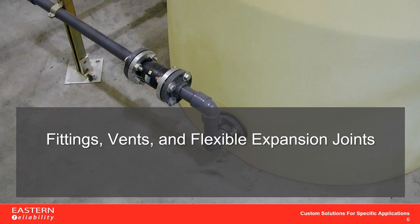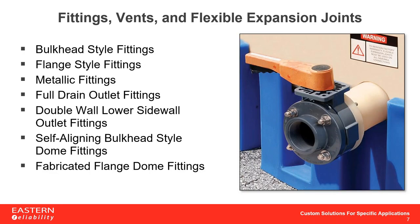In this section we'll discuss in more detail the different types of fittings, vents, and flexible expansion joints. Depending on the design requirements of your system, there's an appropriate fitting ranging from bulkhead fittings all the way to double wall lower sidewall outlet fittings. Depending on where fittings are located on the tank, you want to use the appropriate type. The image on the right shows ASVIN's full drain outlet with the tank elevated on one of ASVIN's full drain outlet tank stands, which we'll discuss later.